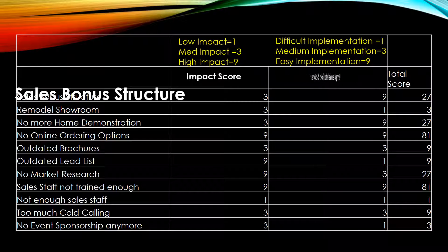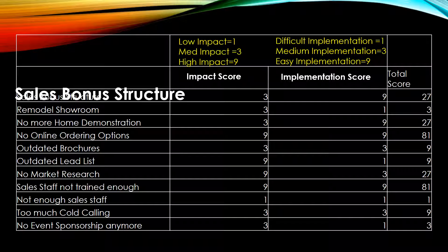Next, you want to think about the implementation score, using a similar scoring methodology: 1, 3, or 9. If it's very difficult to implement, that's going to be a 1. Something with a medium-sized implementation is a 3, and something that's easy is a 9. There are no hard and fast rules for assigning this — you know it when you see it. Difficult is going to be things where you're likely to meet resistance, have to talk someone into something, or get approval to spend money. It's going to be an uphill battle.